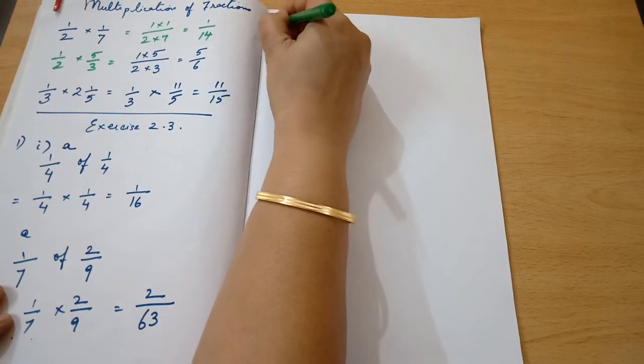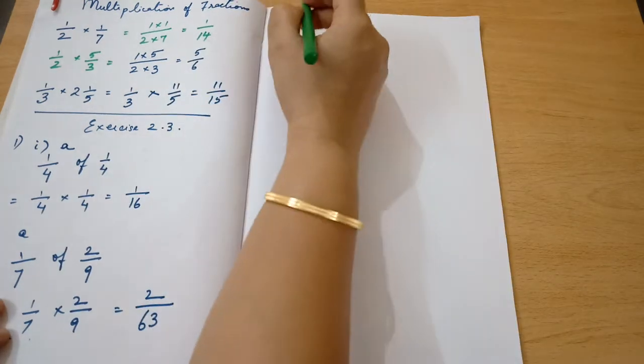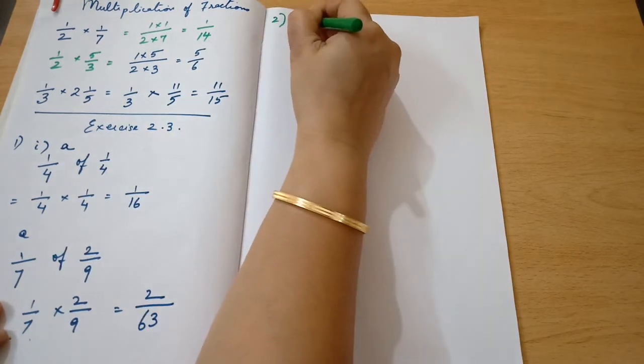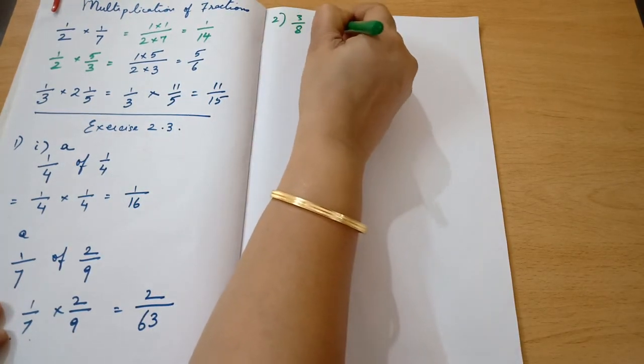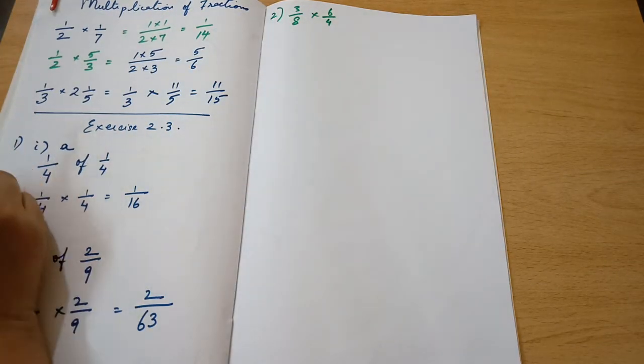The second sum in exercise 2.3, I will do the third division for you. 3 by 8 multiplied by 6 by 4. The question is multiply and reduce to lowest form if possible.